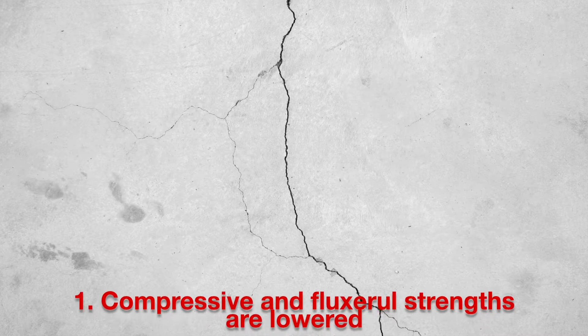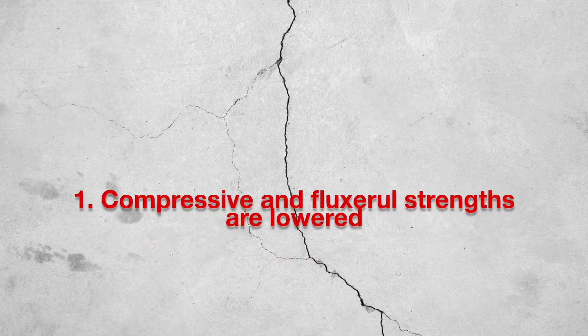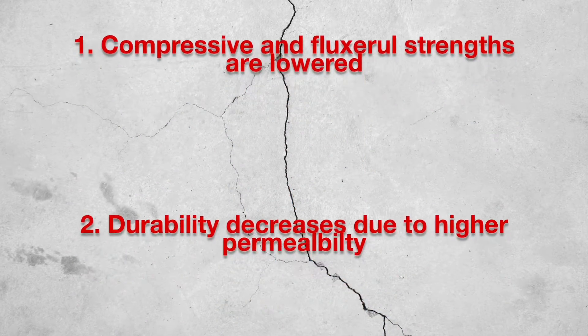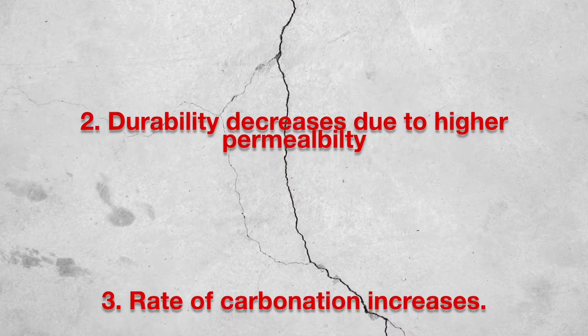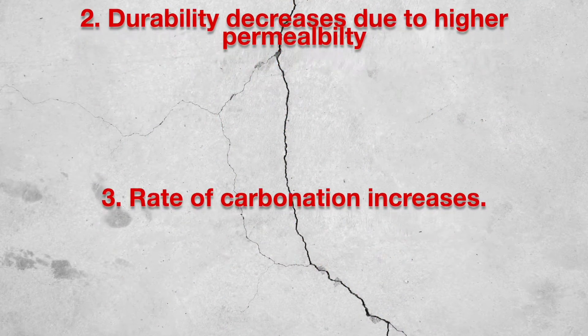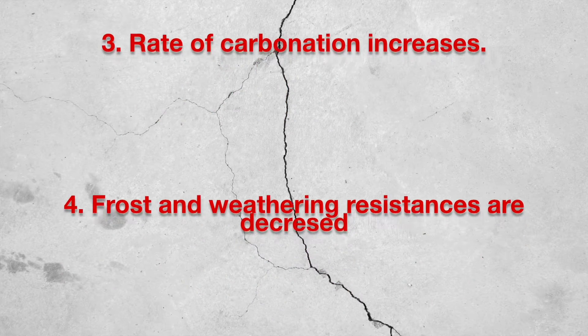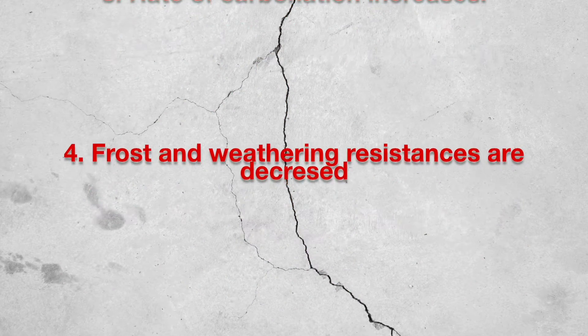In order to avoid cracks, curing must be done properly. Other effects of improper curing include: compressive and flexural strengths are lowered, durability decreases due to higher permeability, rate of carbonation increases, and frost and weathering resistances are decreased.